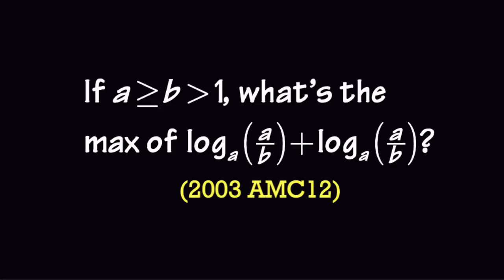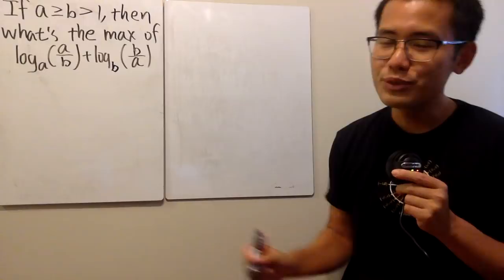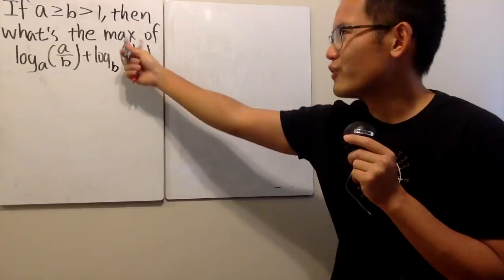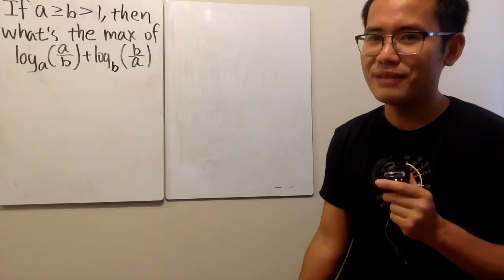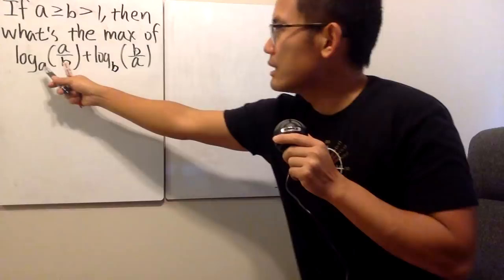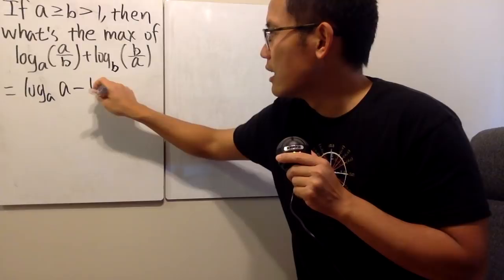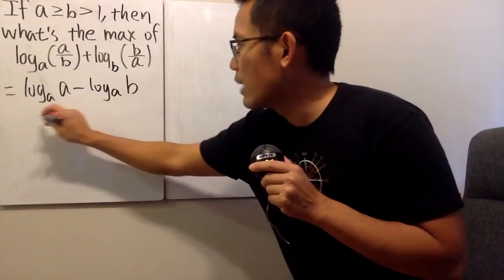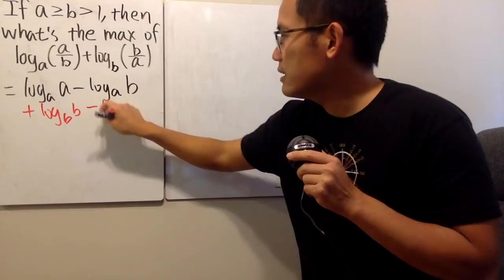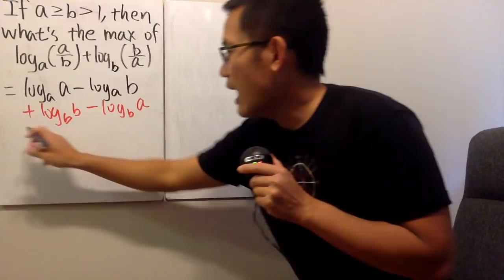Here's the third question: suppose both a and b are greater than 1, and a and b can be equal to each other. Then what's the maximum of this expression? The answer to this is equal to 0. It might seem weird because we're trying to find the maximum and everything seems so positive — how can the maximum be 0? But it is equal to 0. Notice that this is a and that's a, so it's a good idea to use the log property and write it down like this. For the first one, we get log base a of a minus log base a of b. For the second one, we add log base b of b minus log base b of a.